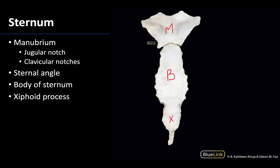The xiphoid could be longer, it could be not completely ossified, so there is a lot of variability when it comes to the xiphoid — and this will be the most inferiorly projecting portion of the sternum. The manubrium is going to have two different areas that I want you to also be able to identify. This region right here is referred to as the jugular notch, sometimes referred to as the suprasternal notch, and this will be right in that midline region.